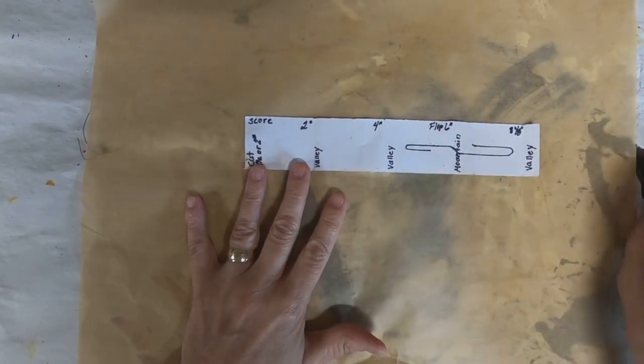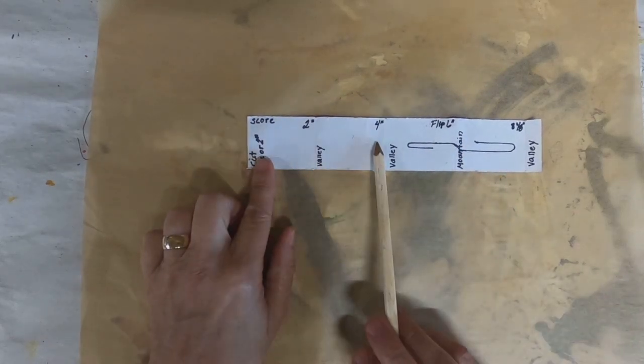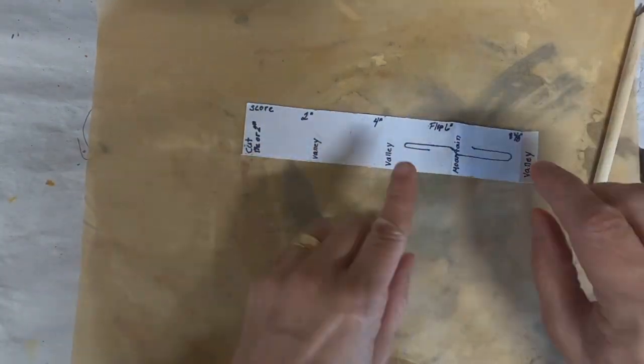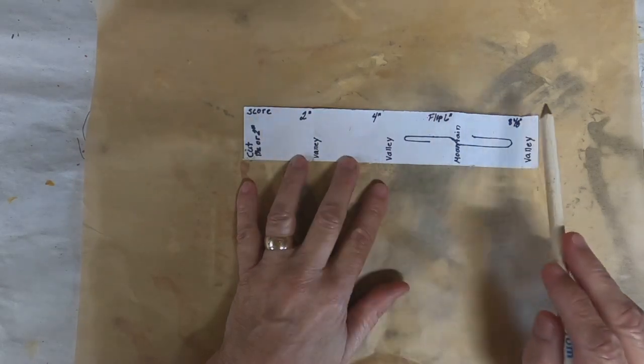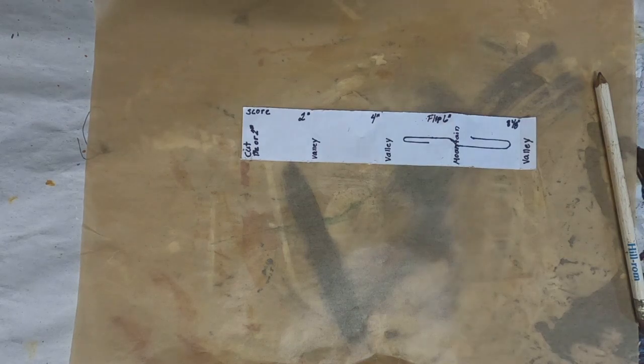So here is the pattern that I put together or the dimensions. So you score it two inches, four inches, and eight and one eighth inches. Then you flip your piece of paper over and score it at six. This is for an eight and a half by eleven sheet of copy paper or that U.S. typewriter weight paper.